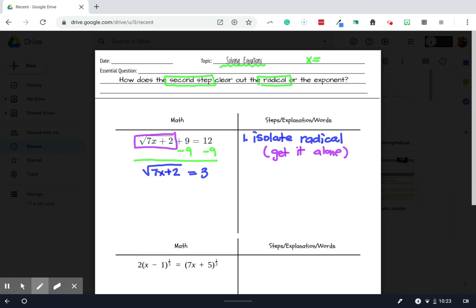Once it's alone, we're going to raise both sides to the same exponent. And what we're going to pick for our exponent is whatever the index is.